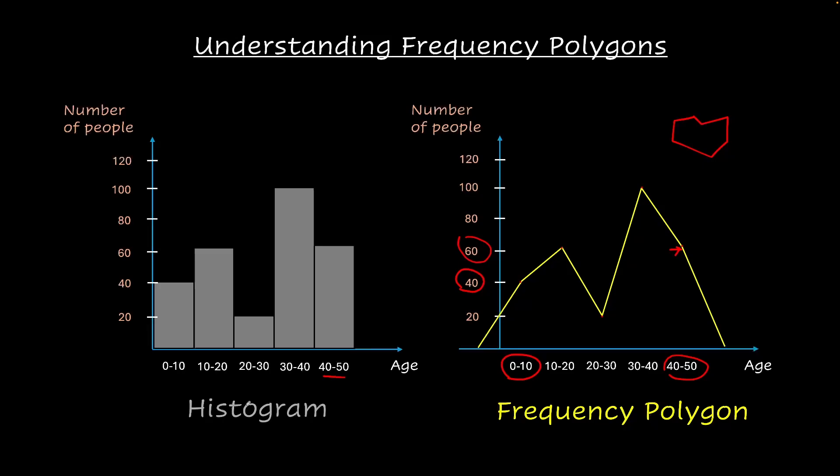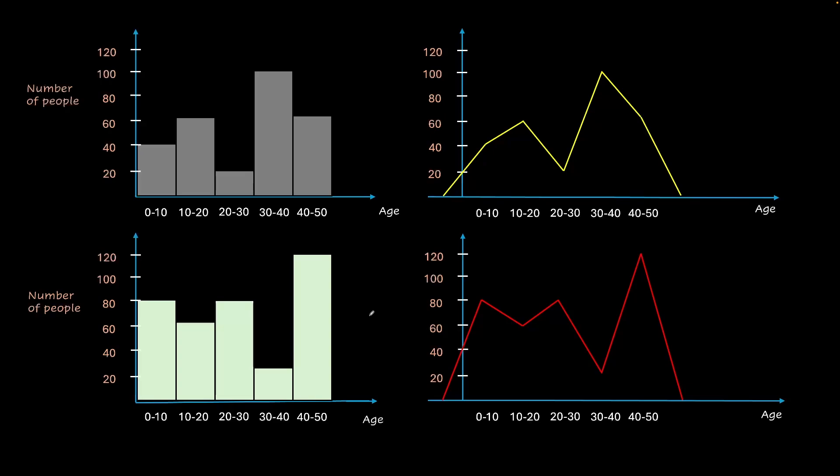But we already have a histogram to do something very similar. Then why do we need a frequency polygon? Let's see. Here I have the data of two different areas. This is one area and this is another area. And you can see that the distributions are different. If you just look at these two graphs at a glance, you can see that this is better for giving a general trend of how things look like.